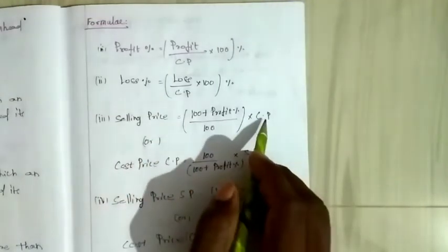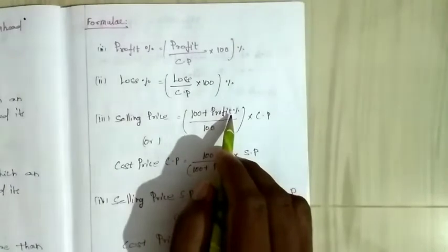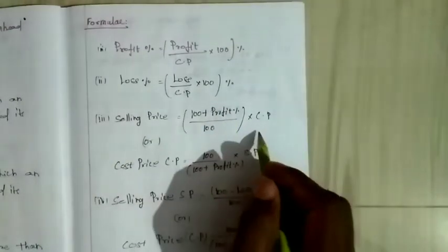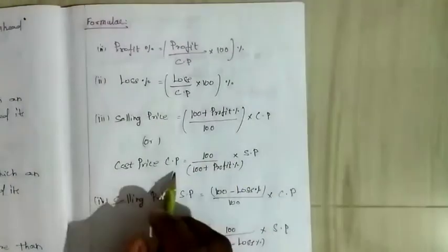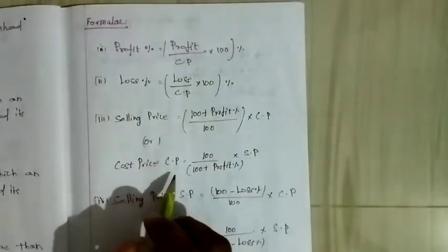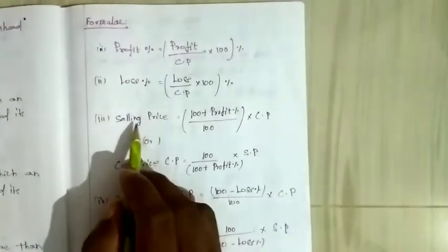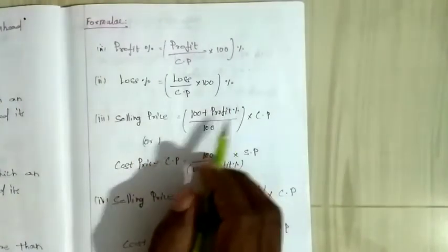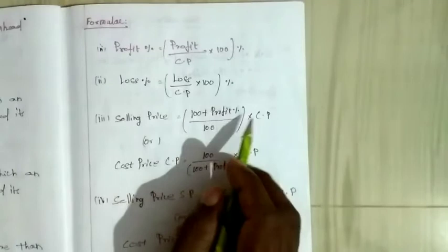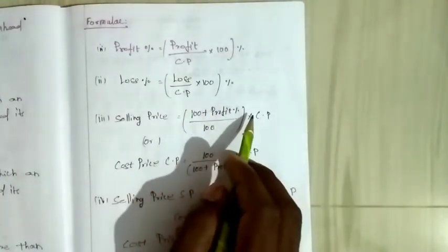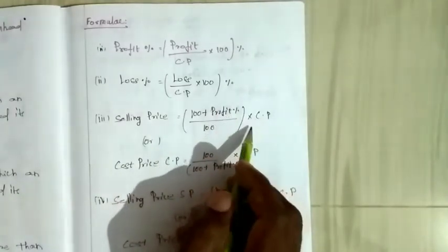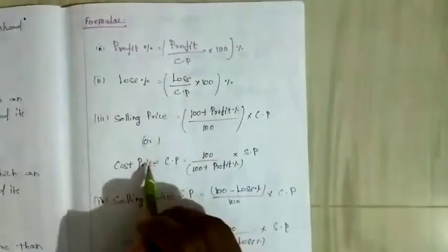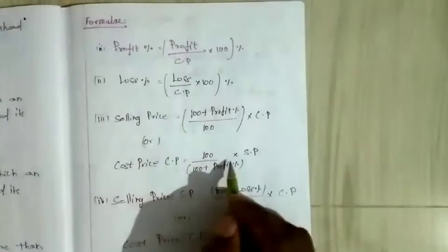Selling price formula when profit percentage and CP are given: SP = ((100 + Profit%) divided by 100) into CP. Also, CP = (100 divided by (100 + Profit%)) into SP.